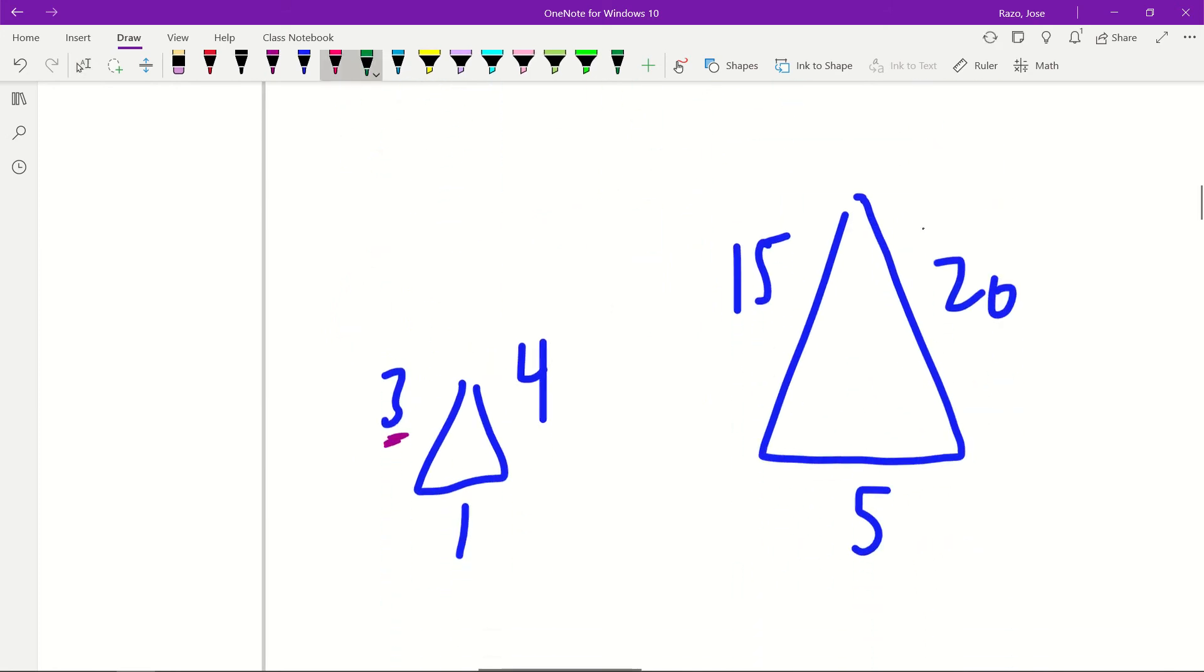Let's use our quick way: three to fifteen gives you times five, four to twenty gives you times five, one to five gives you times five. So these two figures are also similar. Just be careful when you're looking for these.